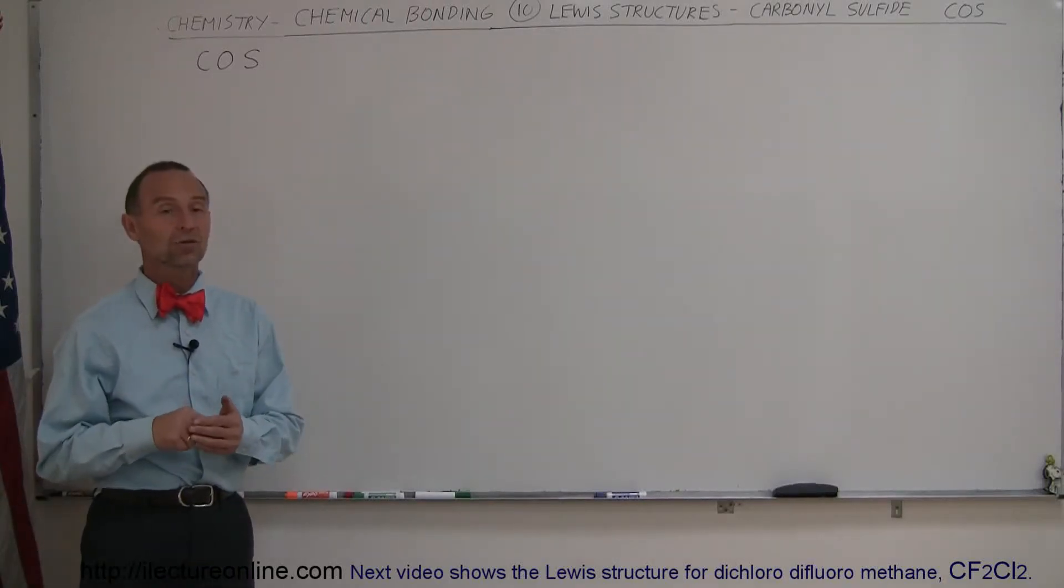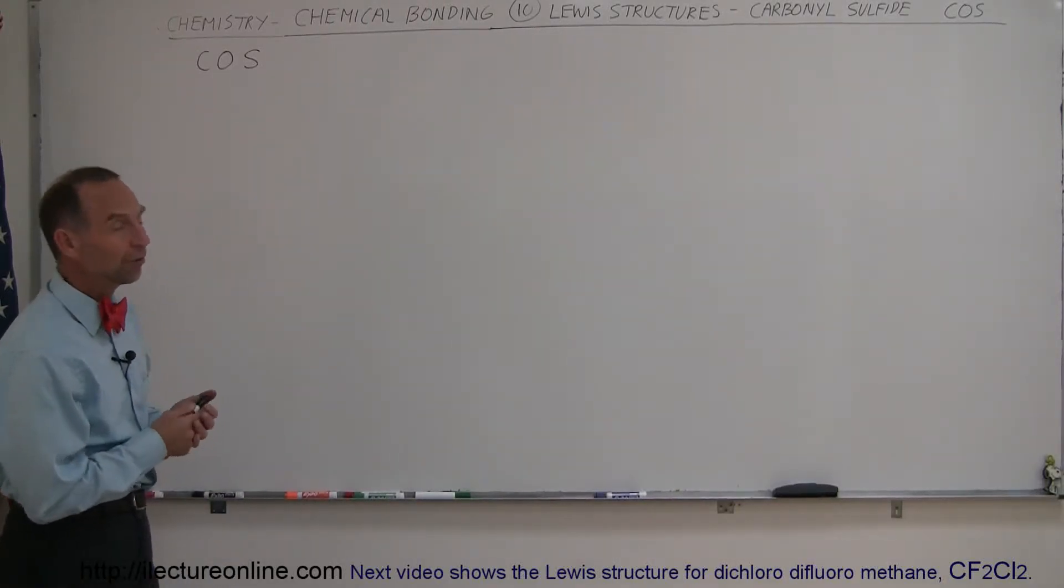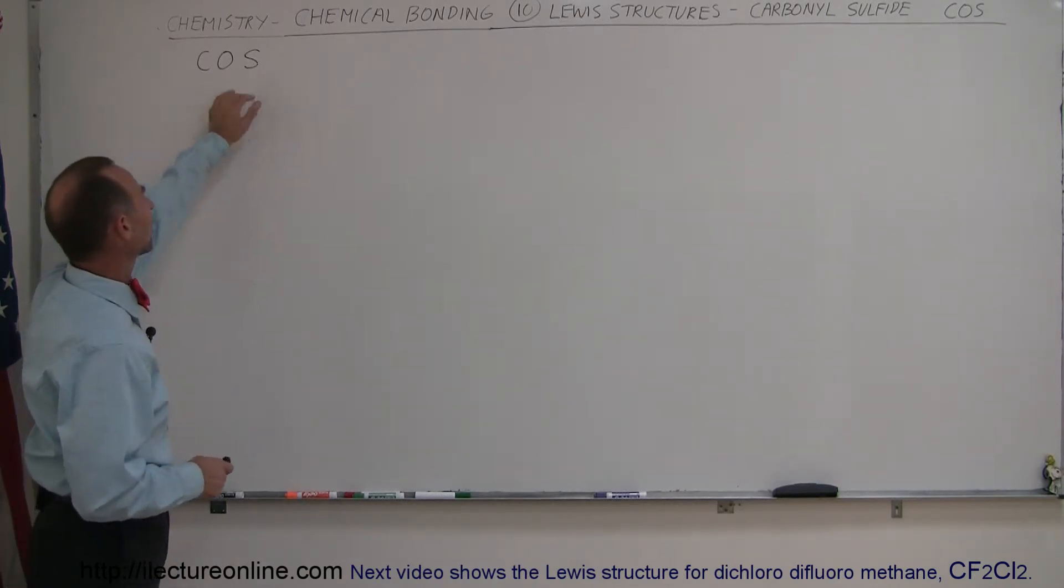In our next example, we're going to write the Lewis structure for carbonyl sulfide, COS. C for carbon, O for oxygen, S for sulfur.